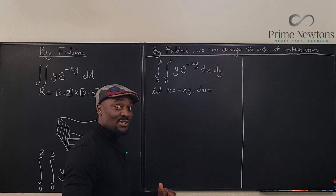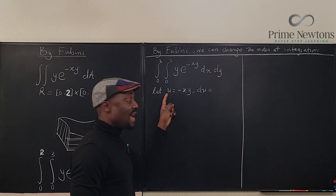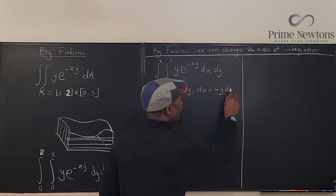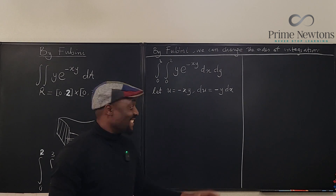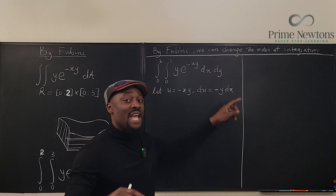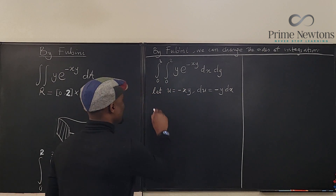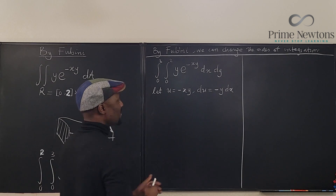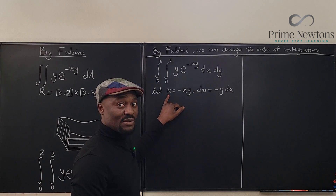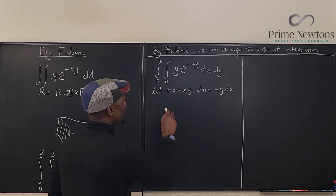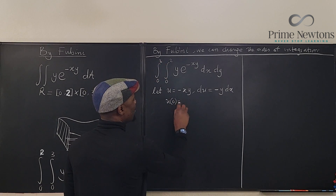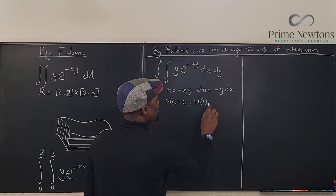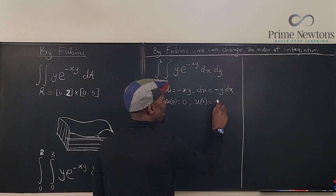I'm going to do a u-substitution. Let u equal negative xy, so du will be obtained by differentiating with respect to x — that gives du/dx equals negative y, so du equals negative y dx. We're treating y as a constant. We also need to change the bounds: u evaluated at x = 0 is 0, and u evaluated at x = 2 is negative 2y.